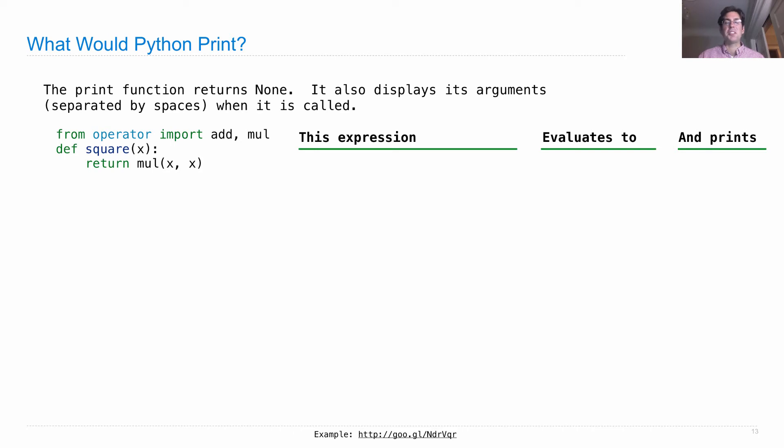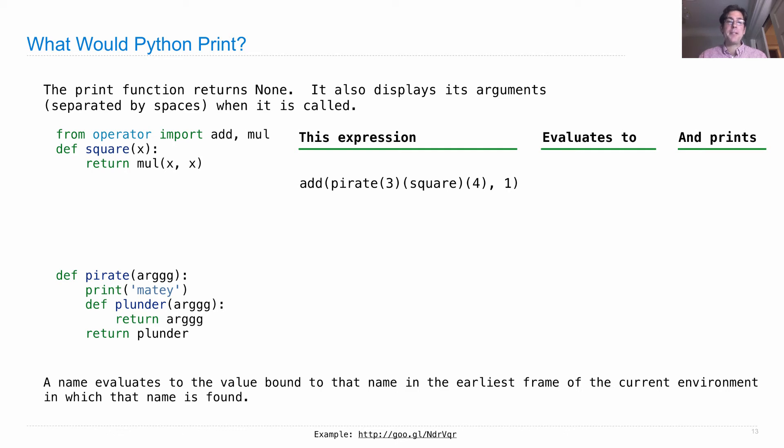Let's do one more, since it's talk like a pirate day today. Let's assume that we typed in def pirate(arg), which prints matey and then defines plunder, which takes an argument arg and returns arg, and then returns plunder. And here's an expression: add(pirate(3)(square)(4), 1). How does this work?